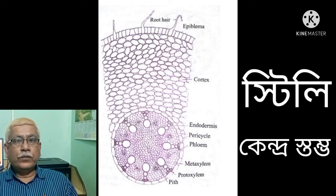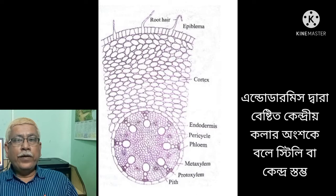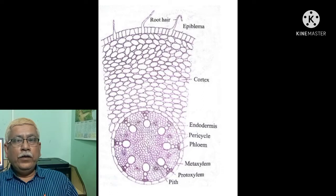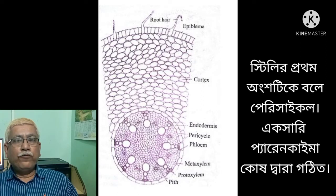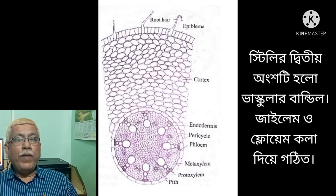Next is the stele. The central portion of the tissue encircled by endodermis is called the stele. It consists of the following: First, pericycle — it occurs just beneath the endodermis and consists of a single layer of thin-walled parenchyma cells.